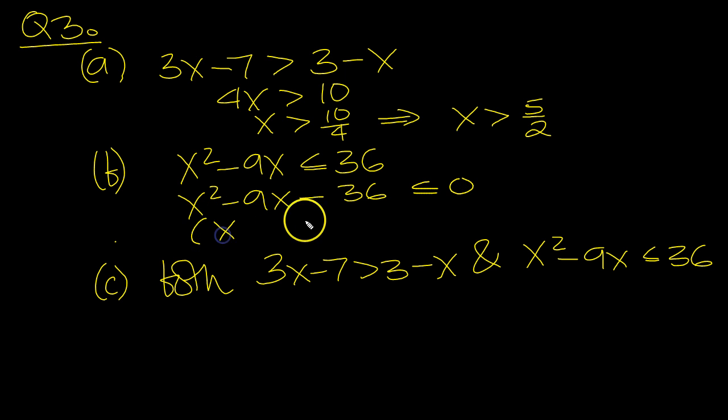So what have we got? We've got x times the factors. Got to be a minus and a plus, hasn't it? Which is less than or equal to 0. We've got a quadratic here with critical values when it's equal to 0 of minus 3 and 12.